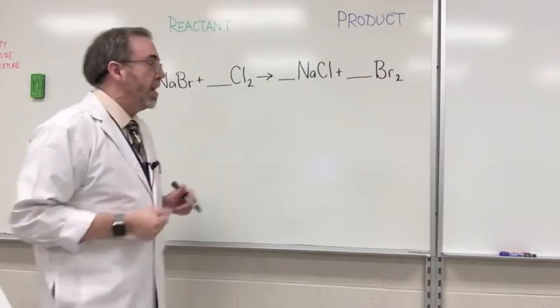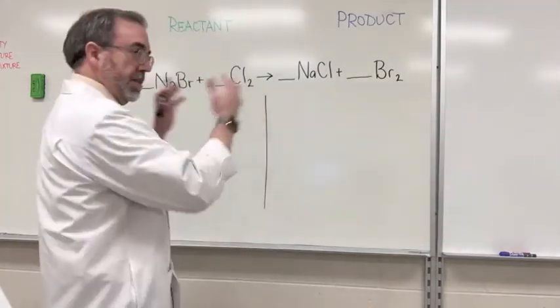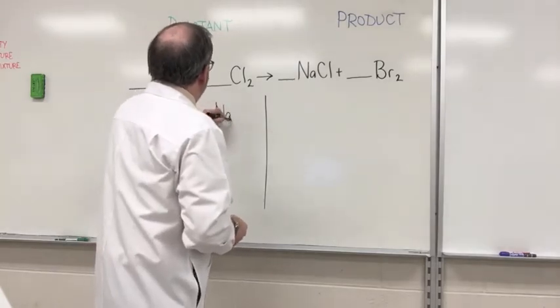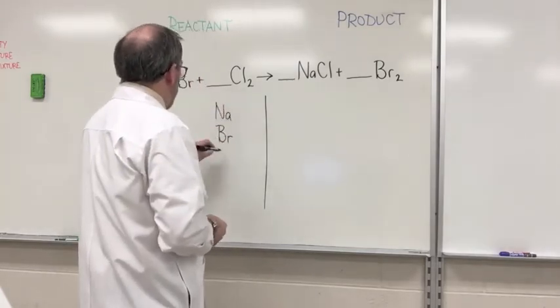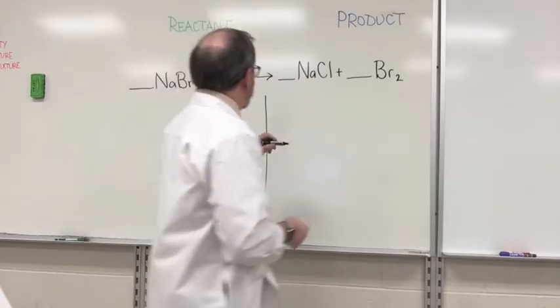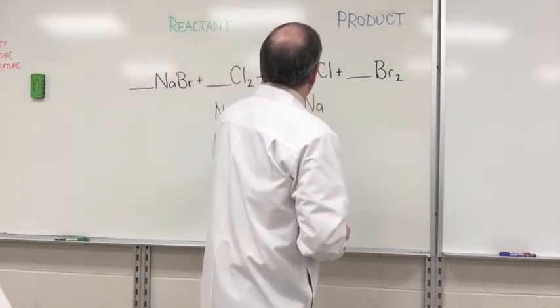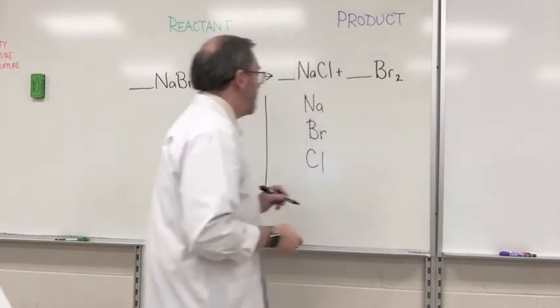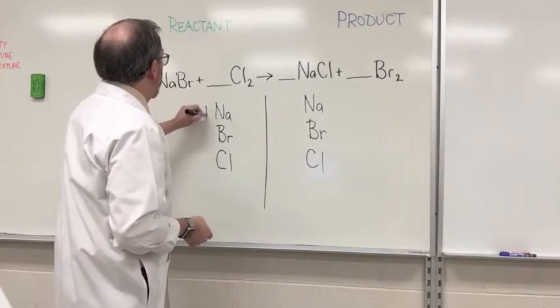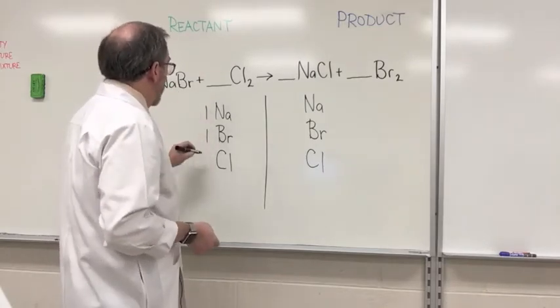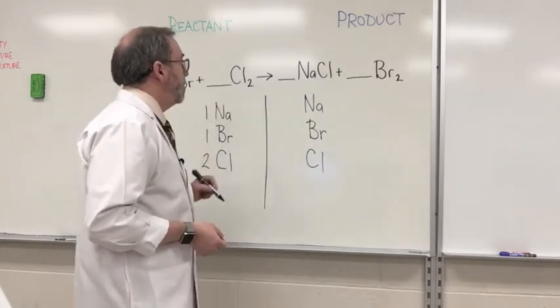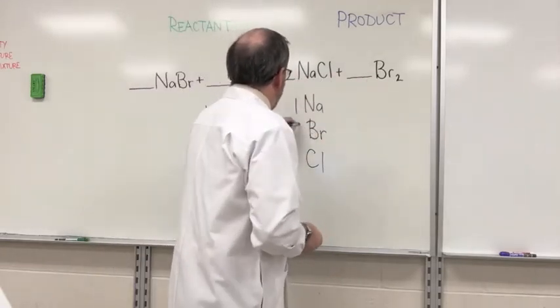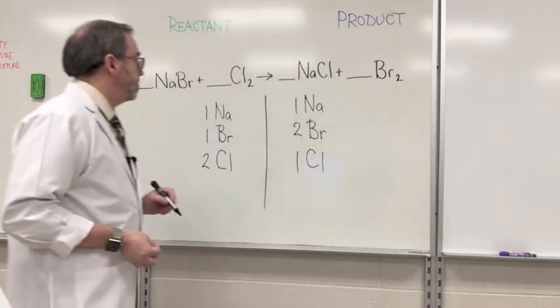Let's do another one. So here we go. Let's do it again. First, divide our line down here so we can separate everything. Take inventory. Over here, same order. All right, and now let's count them up. We've got one, got one, we've got two, because there's the two. Over here we have one, we have two, and we have one.